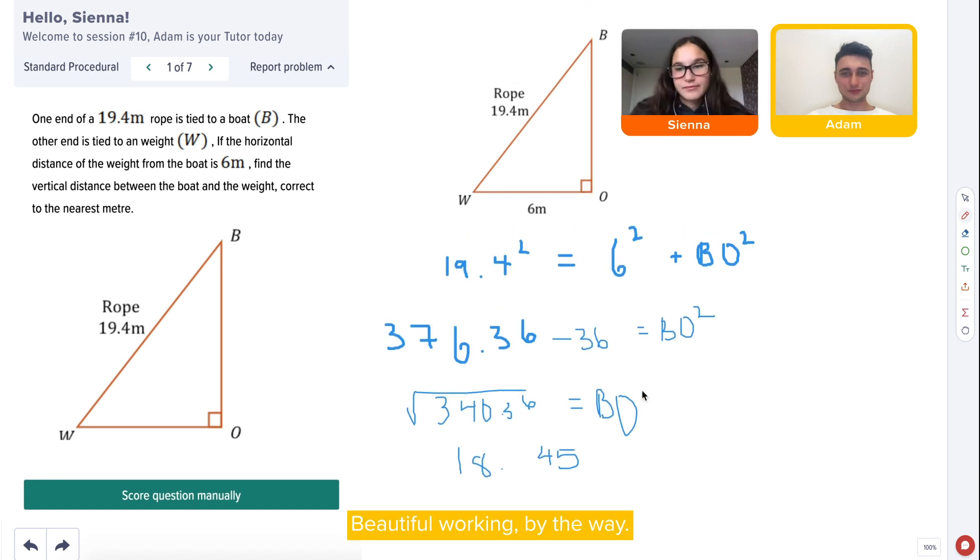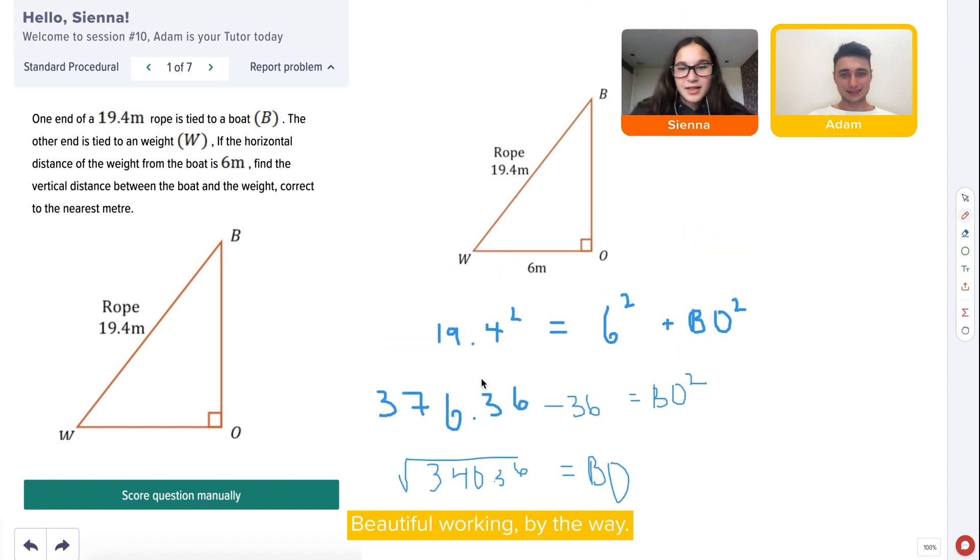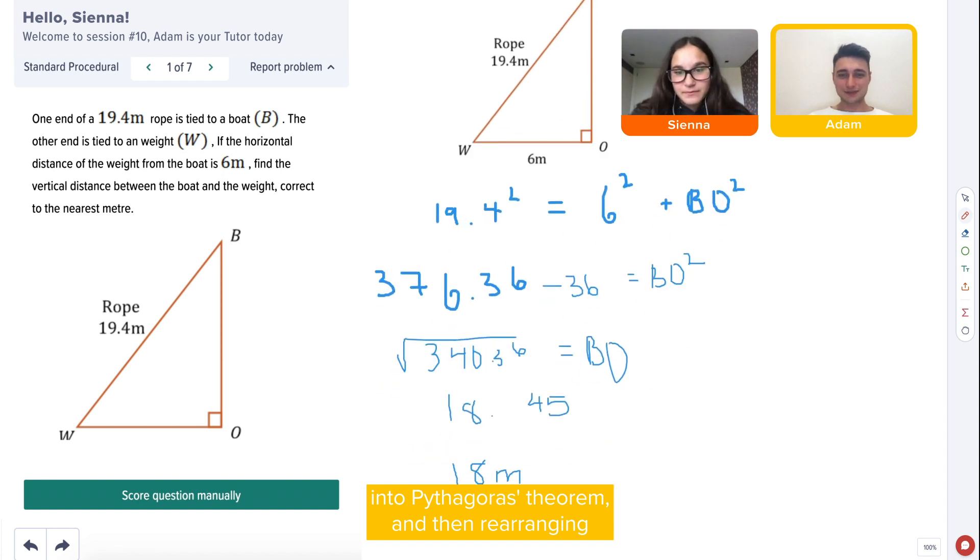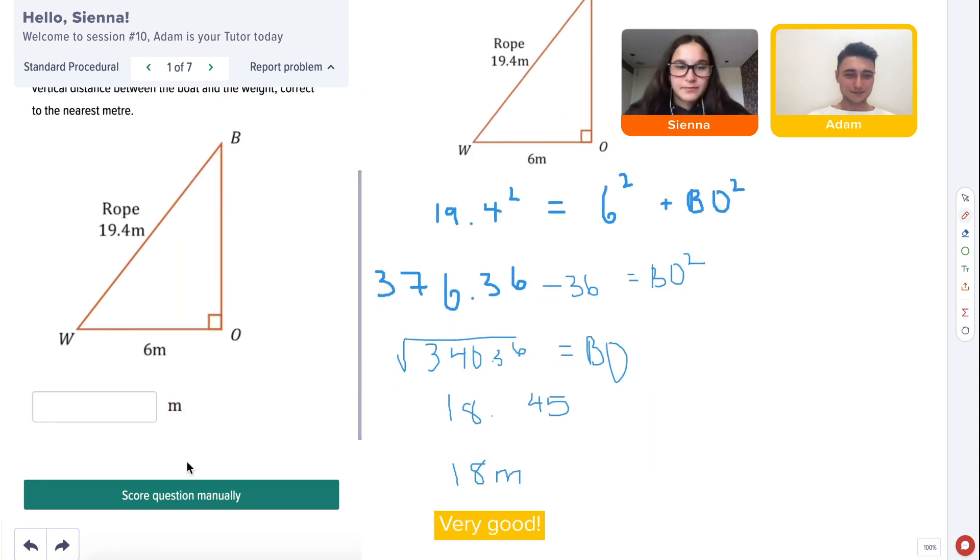No, just 18. Beautiful working, by the way. Thank you. Substituting the values into Pythagoras' theorem and then rearranging to solve for the unknown. Very good.